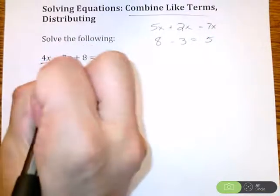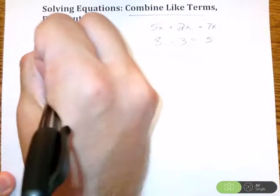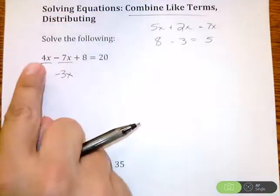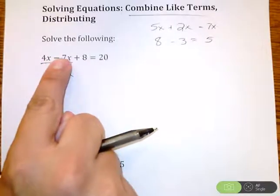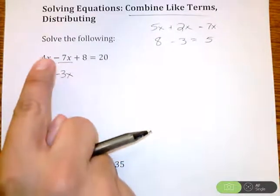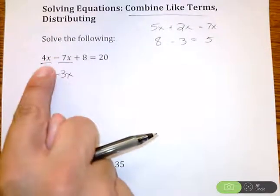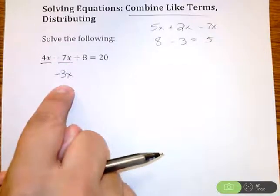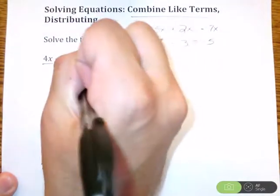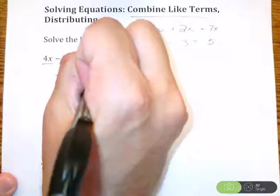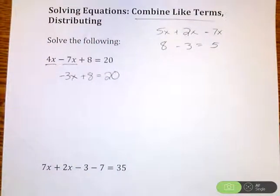So cutting up what we can. Looking at this, I have 4x minus 7x, which is negative 3x. All I did is I took 4 minus 7, which is negative 3, still have the x hanging around. So I combine this 4x minus 7x, I get negative 3x. Still have that plus 8 hanging out because I haven't touched that. Still have the equals 20. So just like that, by combining like terms, now I'm starting to look like an equation that I've solved before.